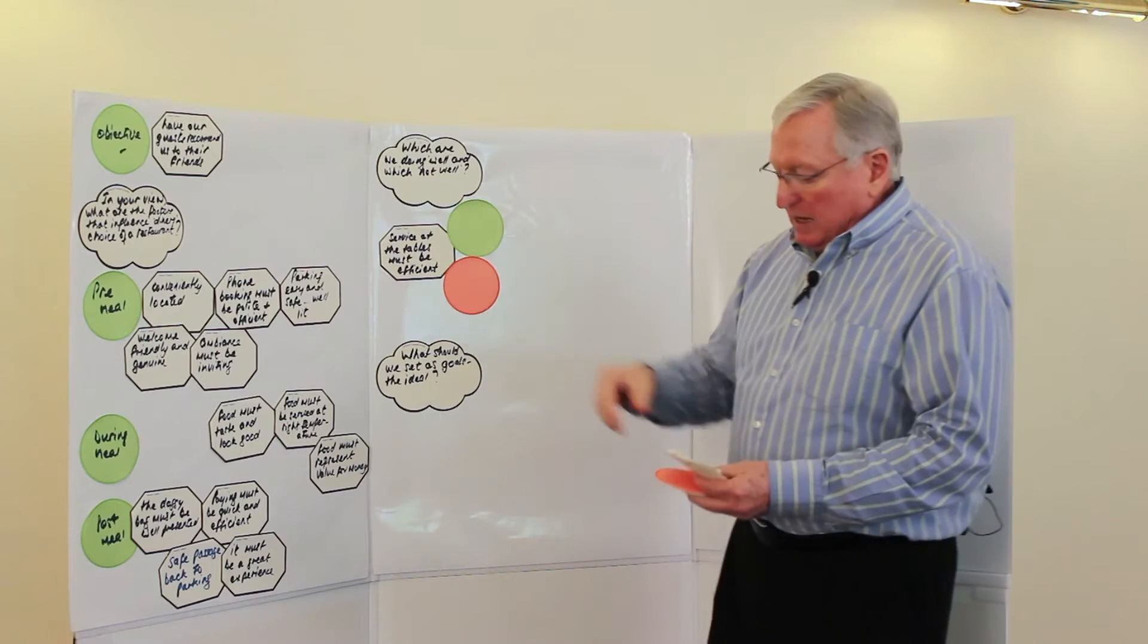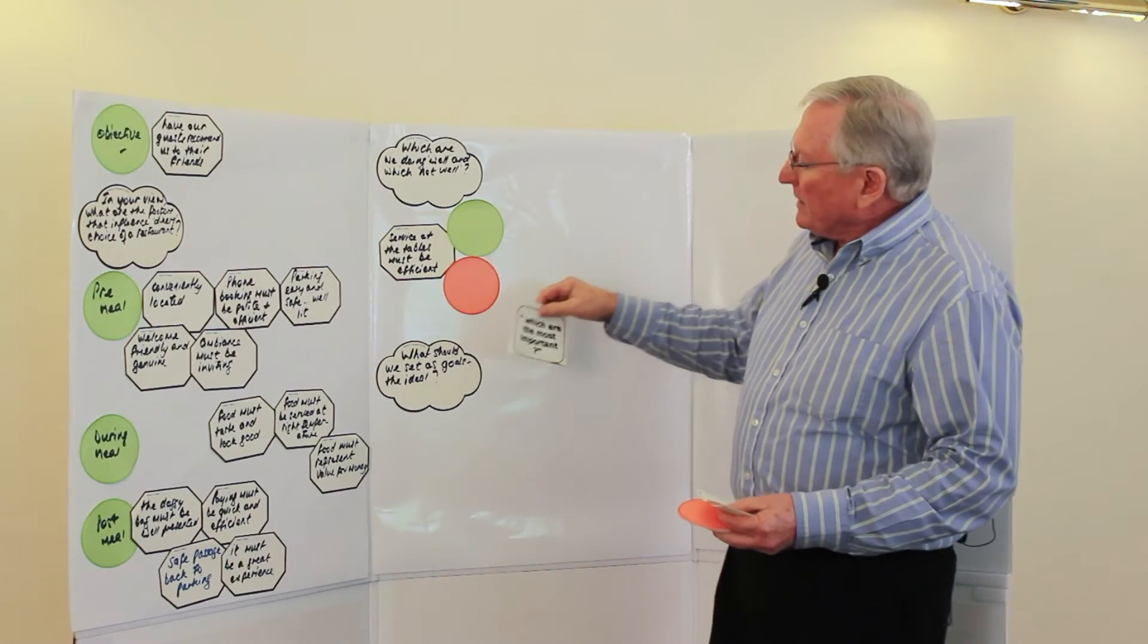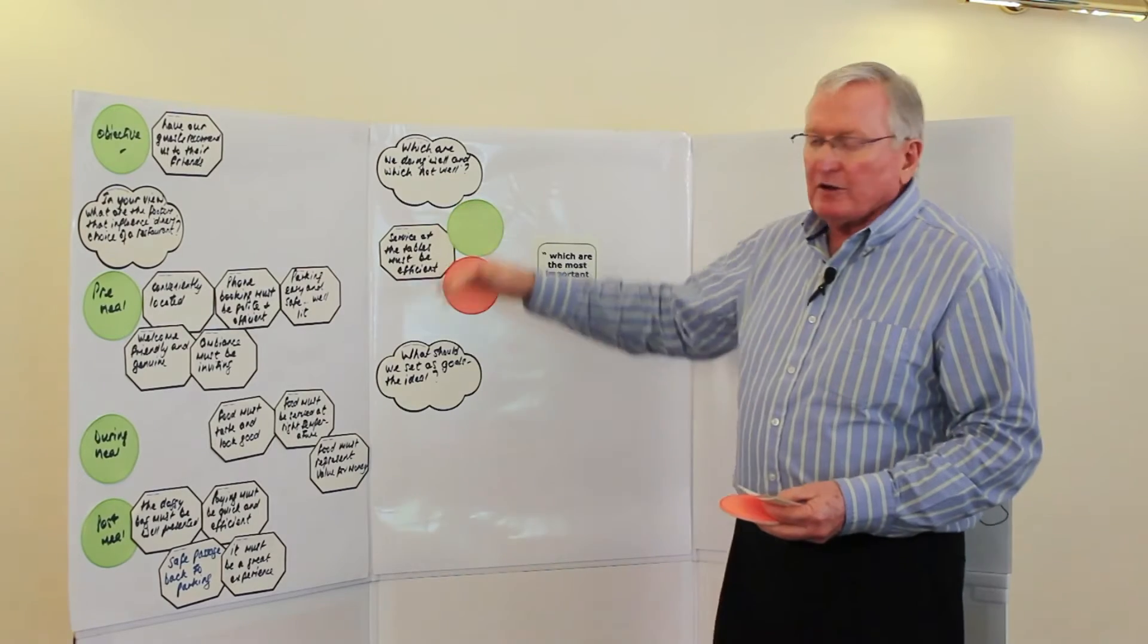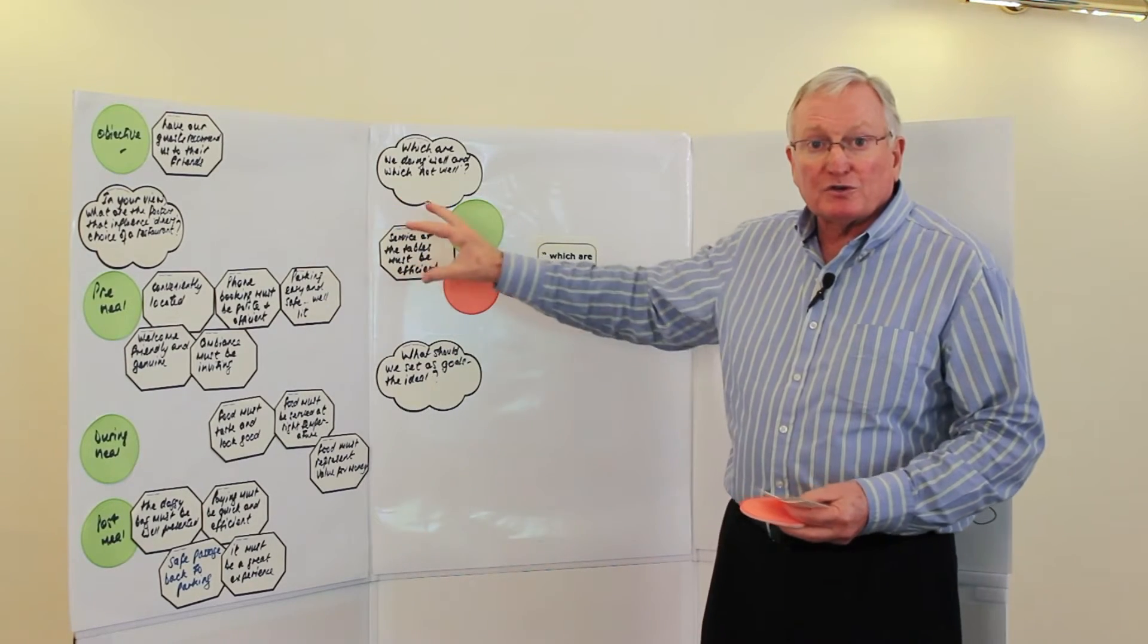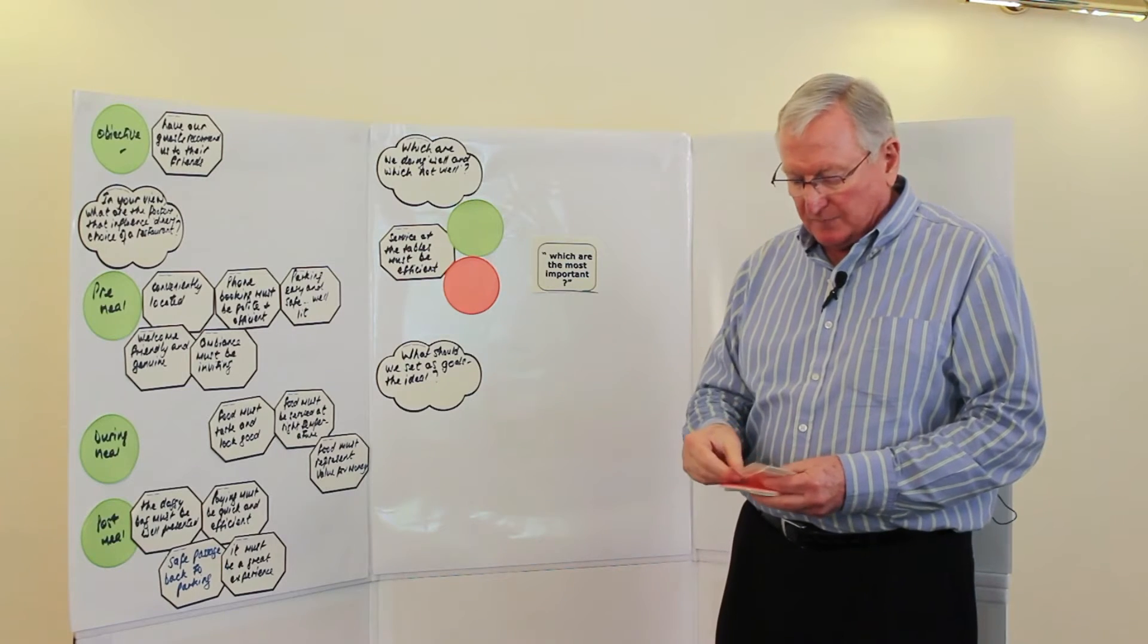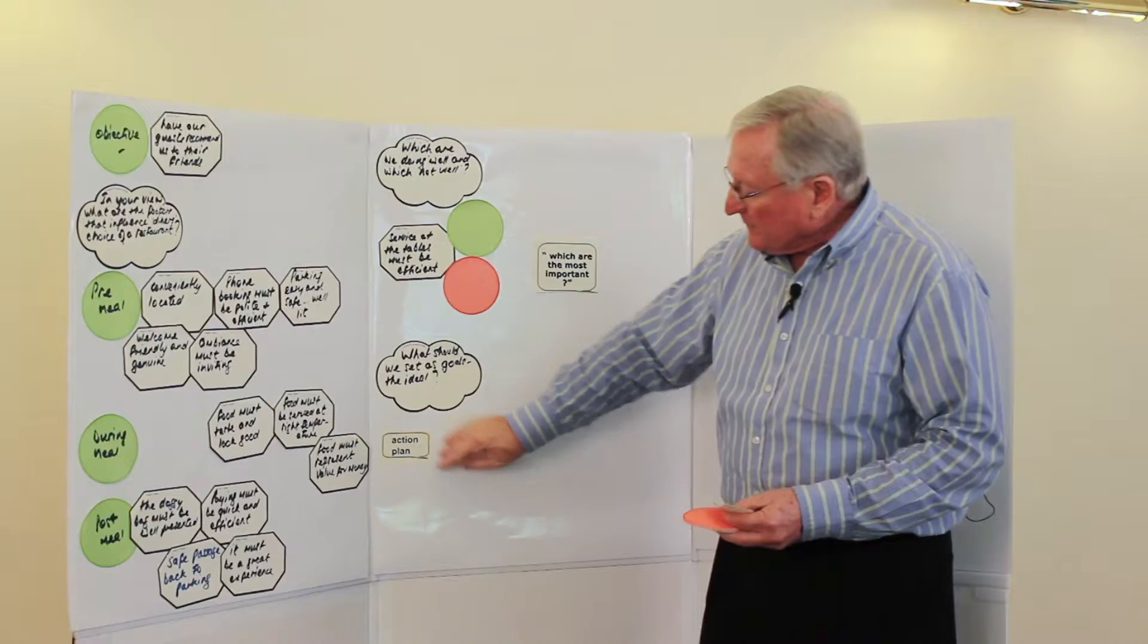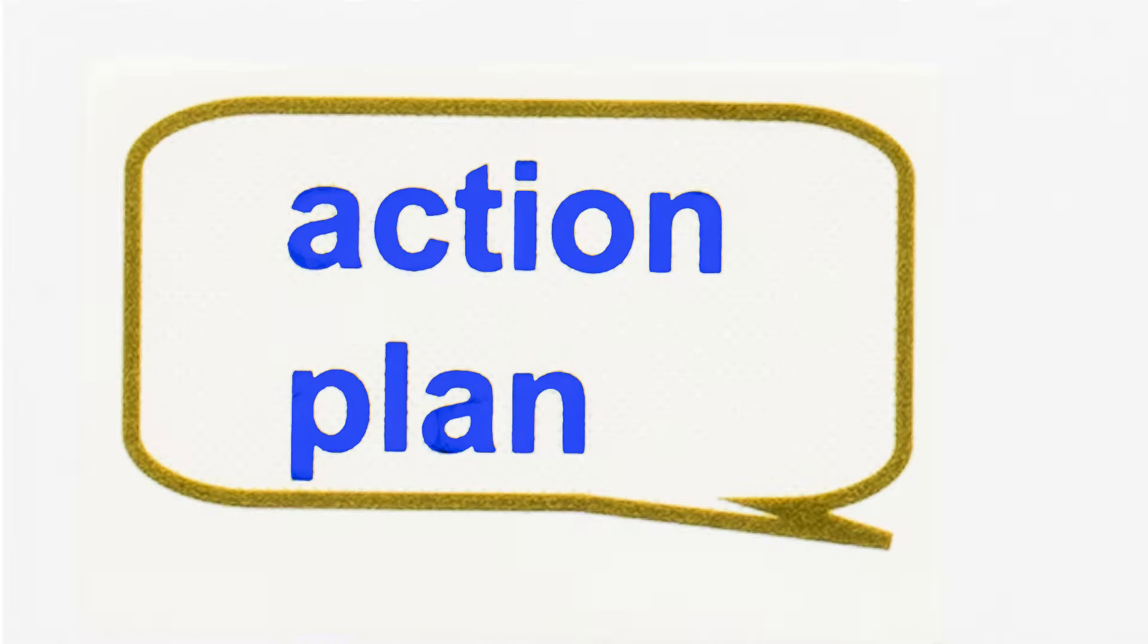And then finally, out of all of these, when we've got all of them done, we might say, okay, which are the most important? And we might vote on the issues which we've got to address first and most urgently. And then for the ones we need to tackle, we would then finally build an action plan.